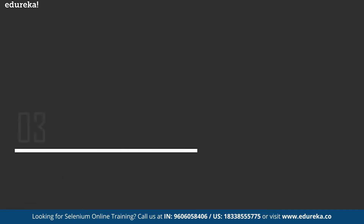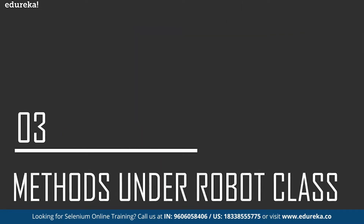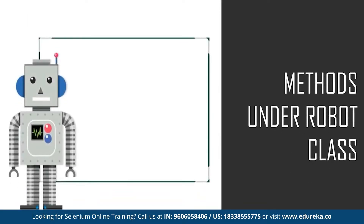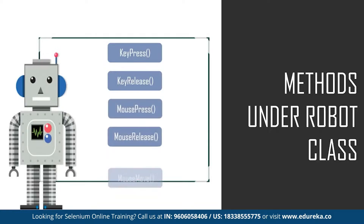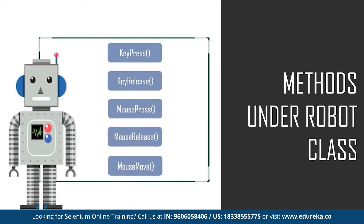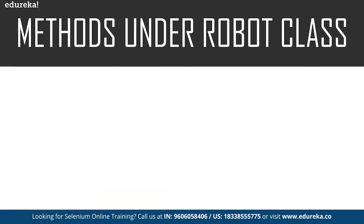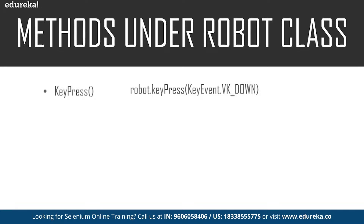Now let's move on to the different methods used while working with this robot class. There are basically five different methods. Since it handles all keyboard and mouse functions, the first method is key press — this is used to press any key on the keyboard. For example, with this particular command, it will press the up key on the keyboard.